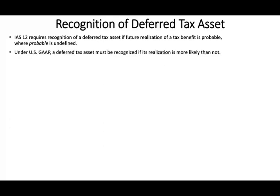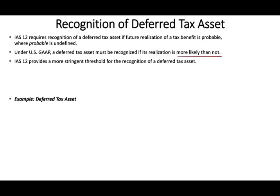Under US GAAP, a deferred tax asset must be recognized if realization is more likely than not. Under US GAAP, they are less stringent — more likely than not means there's a good chance and you can do it; they're more liberal. IAS-12 is more stringent. Let's take a look at an example to show how it works from an operating loss perspective.